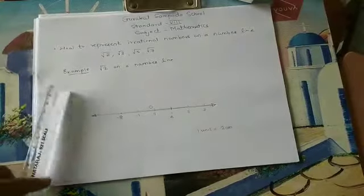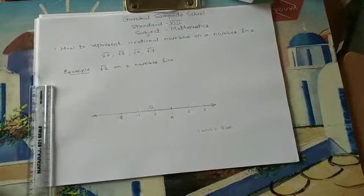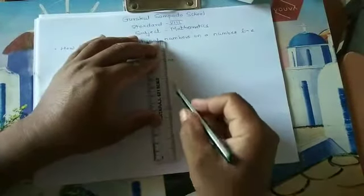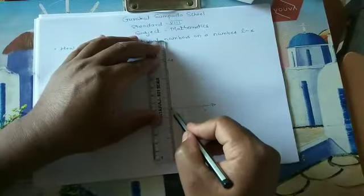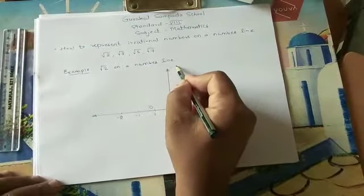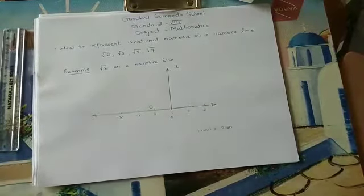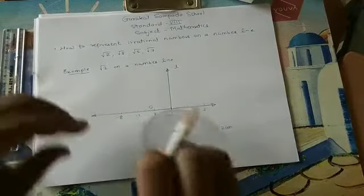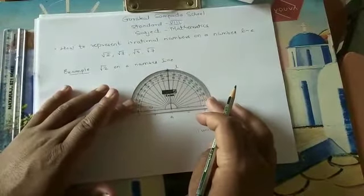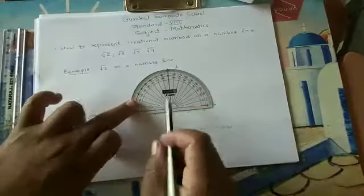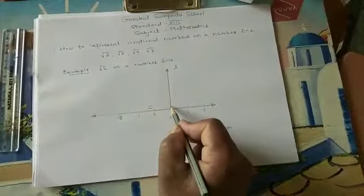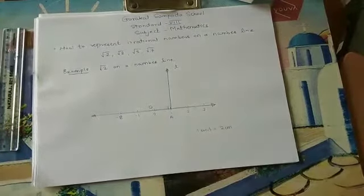The first step is to draw a perpendicular line passing through point A. A perpendicular line is a line which makes an angle of 90 degrees with this line. Suppose this is Line L. If you measure this angle, you find it is 90 degrees. Perpendicular line is a line which makes an angle of 90 degrees — here is the symbol of right angle.